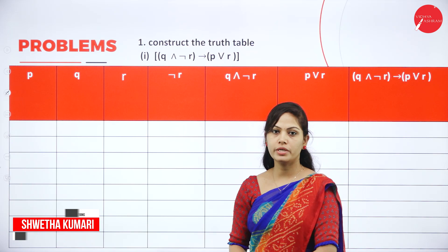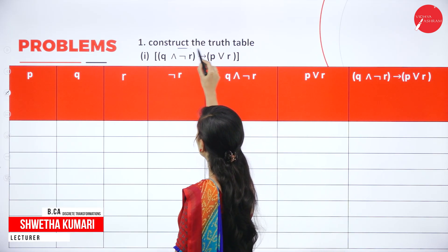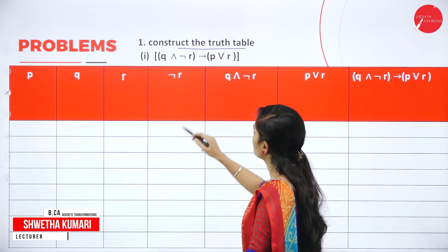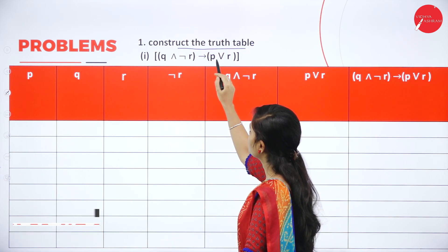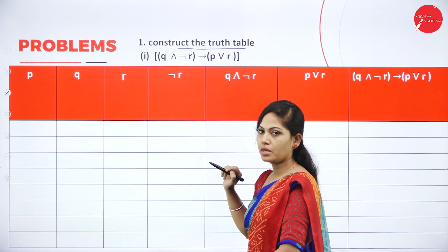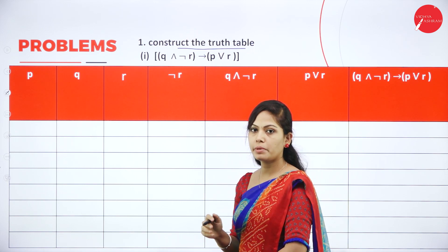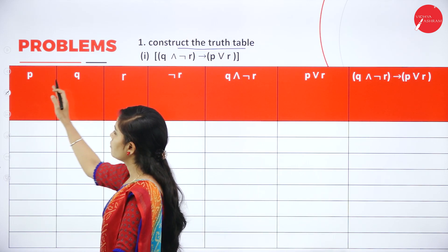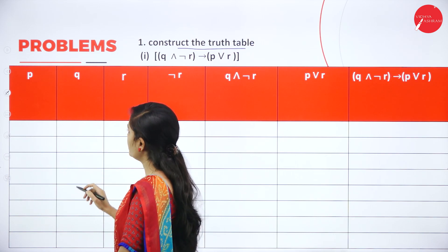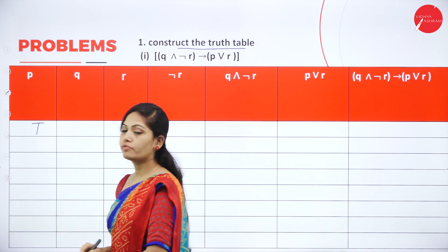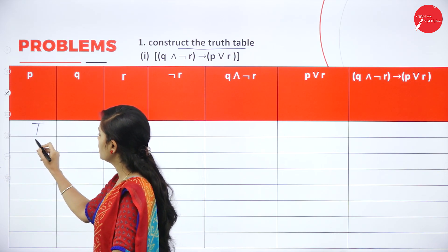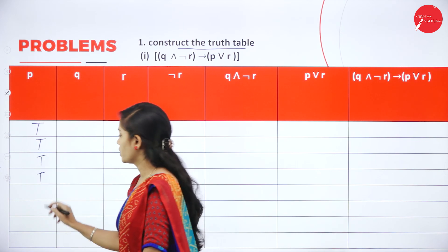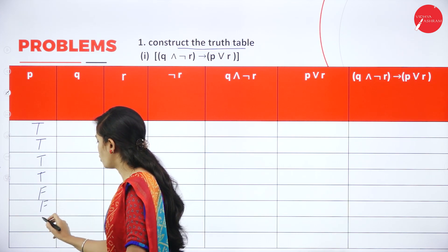The first important question is: construct the truth table for Q ∧ ¬R → P ∨ R. We have three variables P, Q, and R. First, construct the truth table. For the first column, 4 conditions are true and 4 conditions are false.